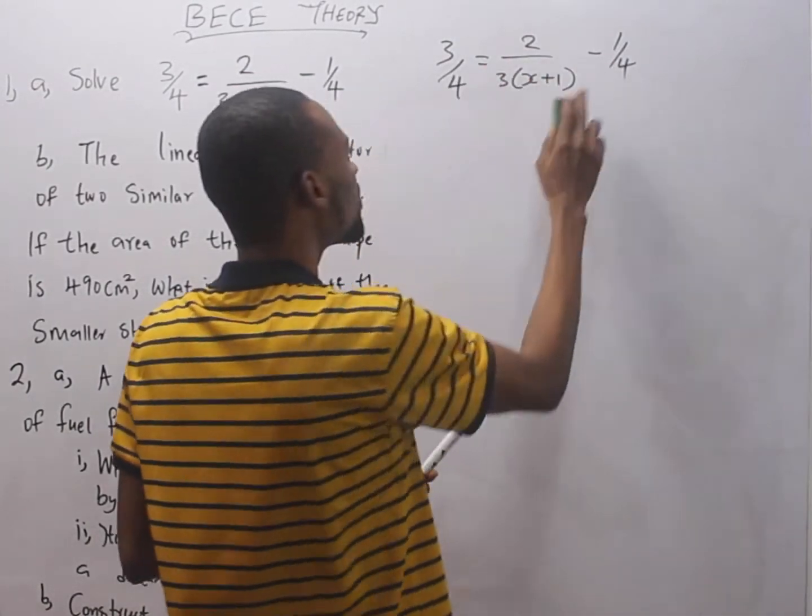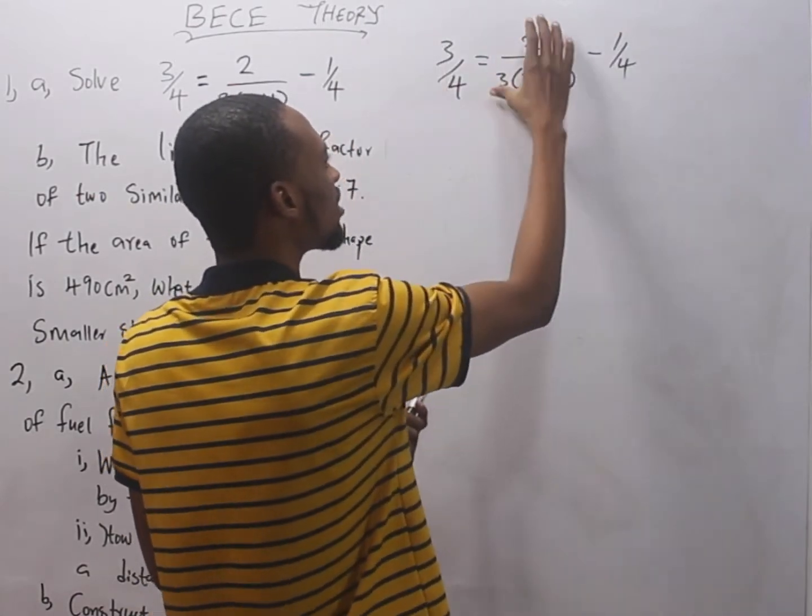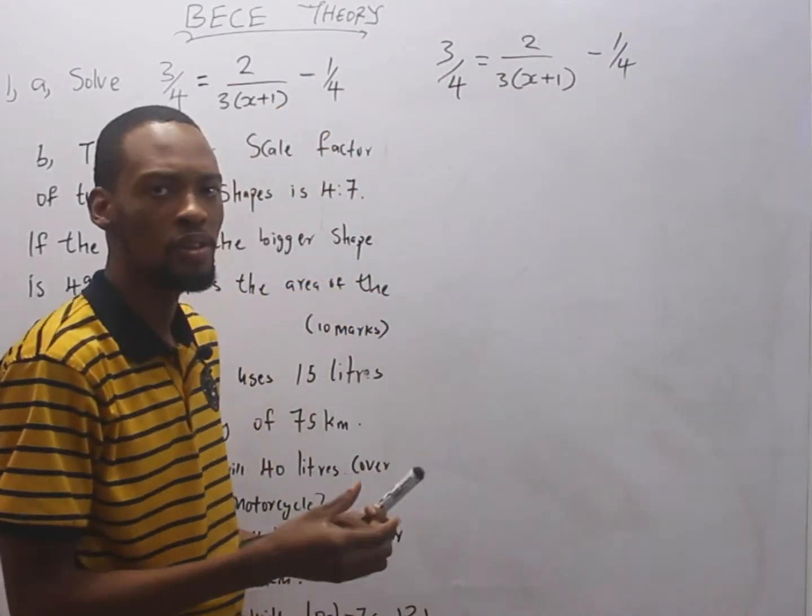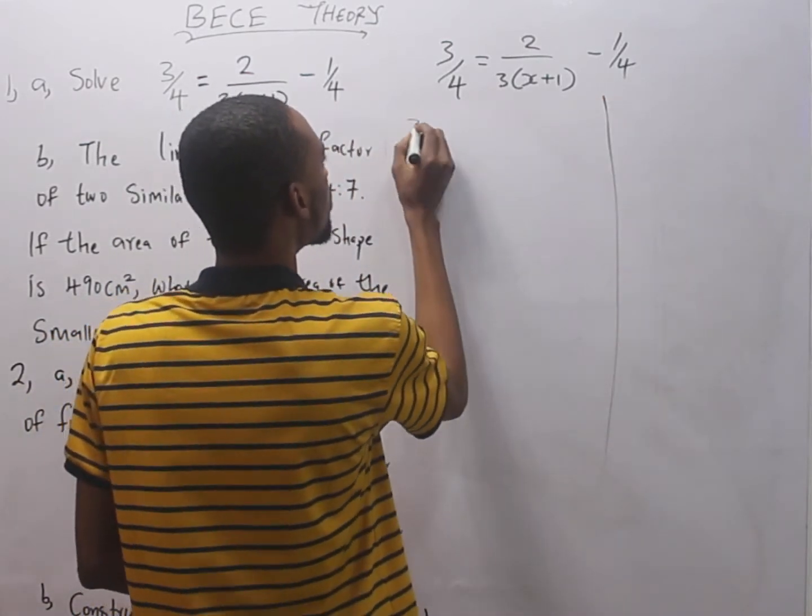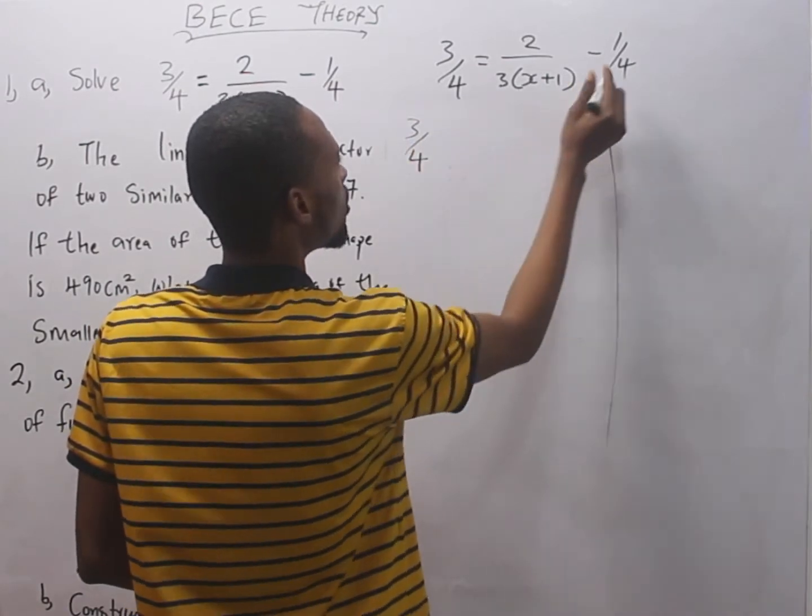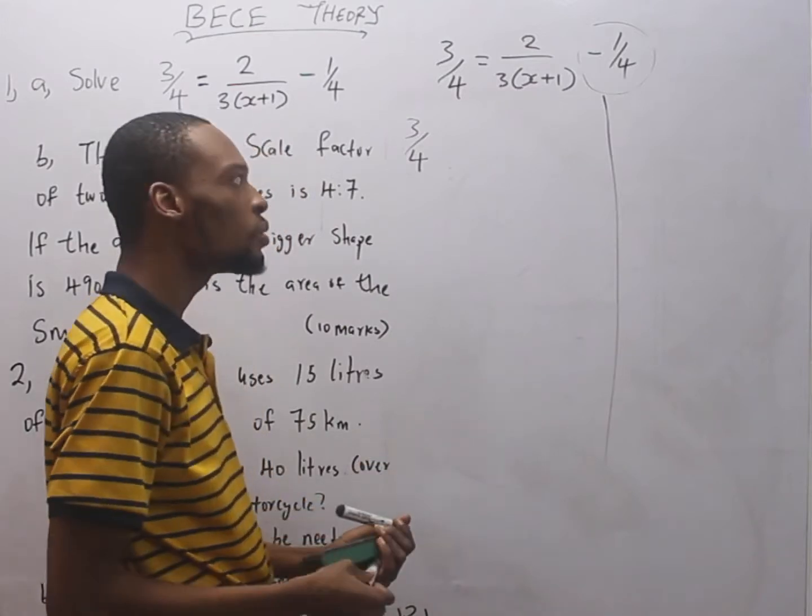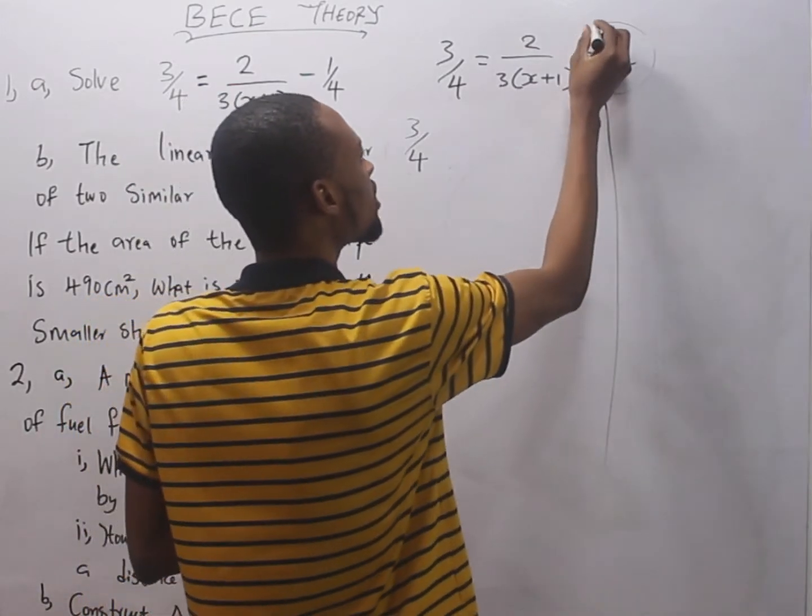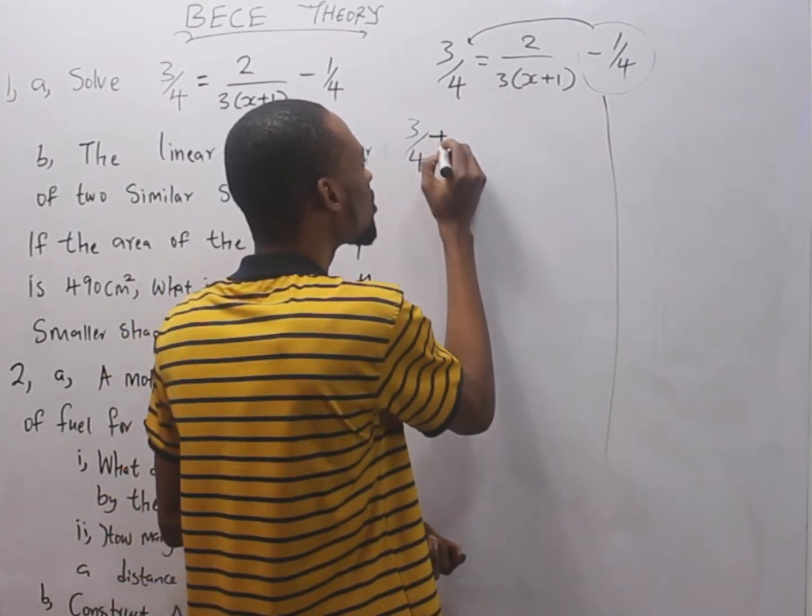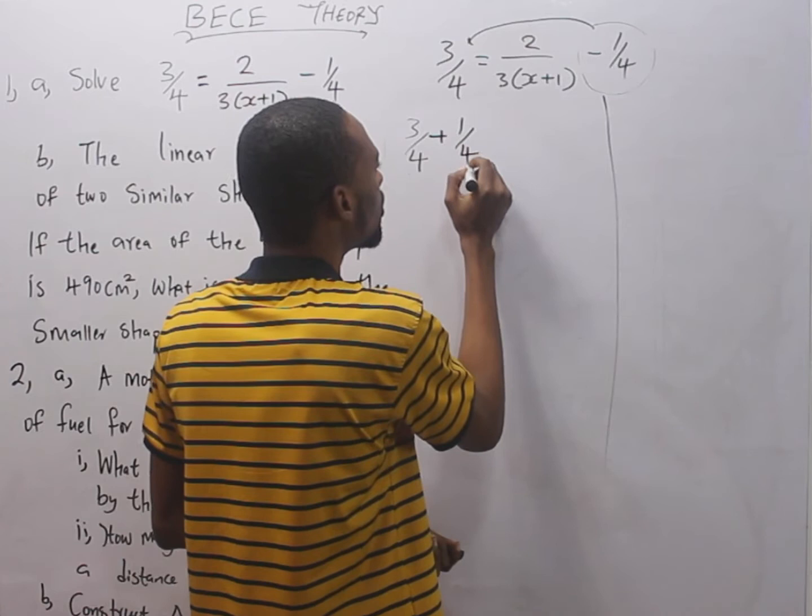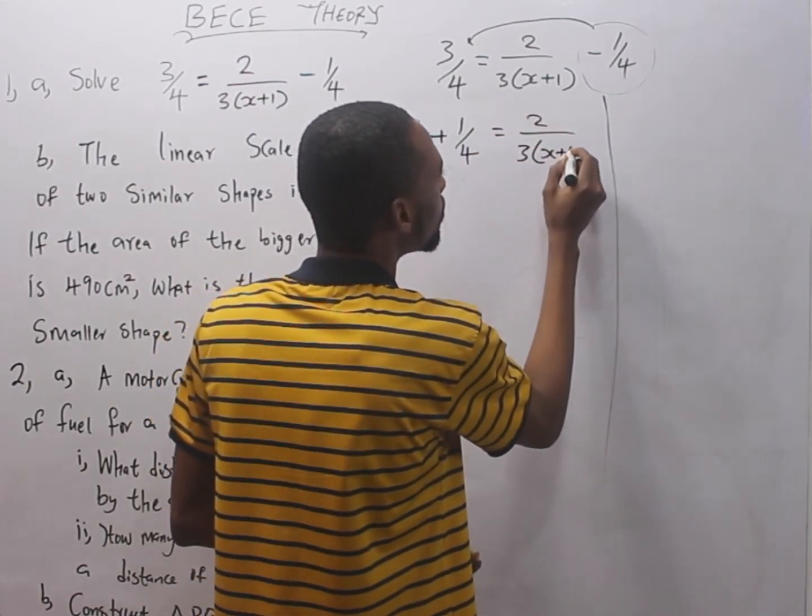Since the denominator has s, I can choose to bring this one this way, so that we solve this alone. I will simply say 3 over 4, this is minus 1 over 4. The minus is affecting 1 over 4 alone. As it crosses the equality sign this way, it becomes positive, making it plus 1 over 4 equals 2 over 3s plus 1.